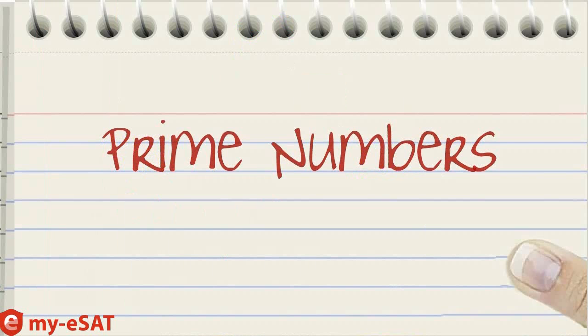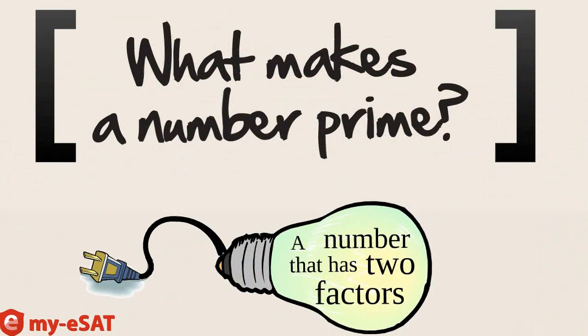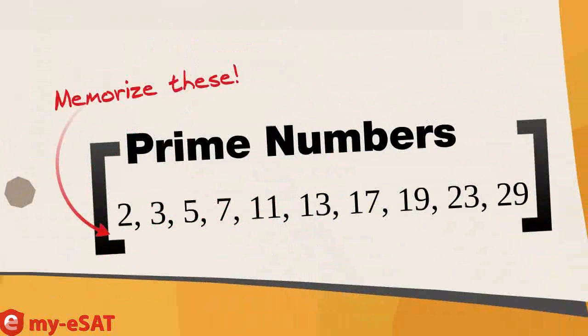Next up, what is a prime number? A prime number is a number that has two factors: one and itself. The first 10 prime numbers in increasing order are 2, 3, 5, 7, 11, 13, 17, 19, 23, and 29.